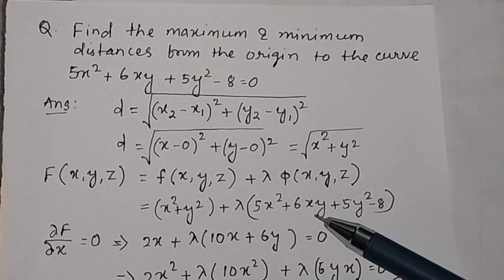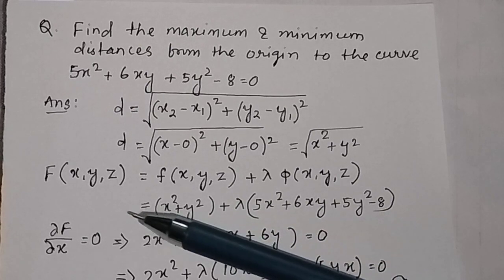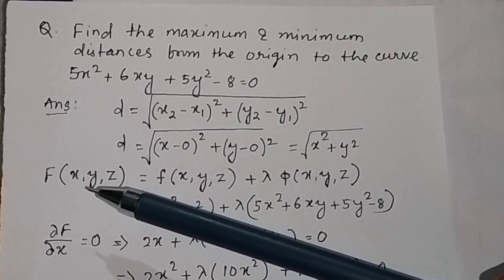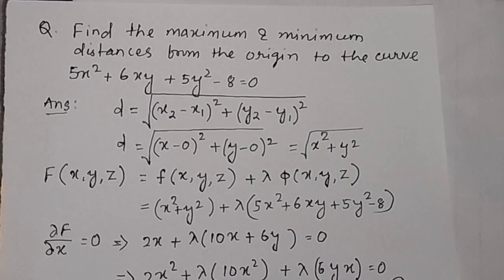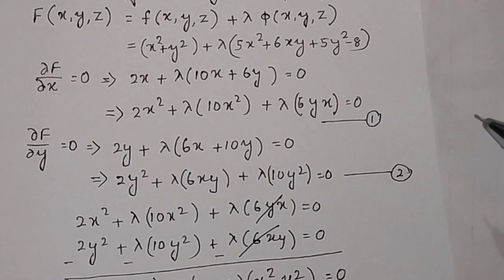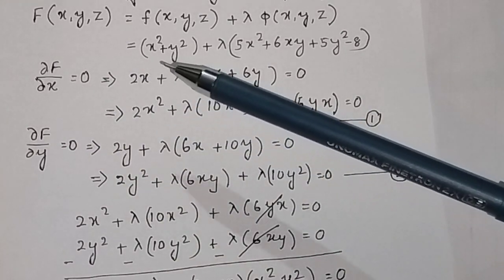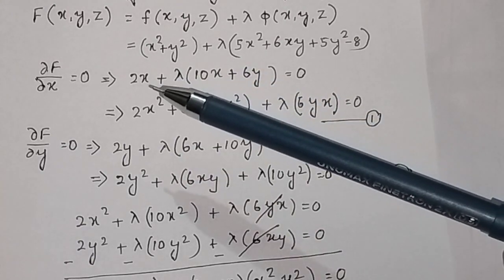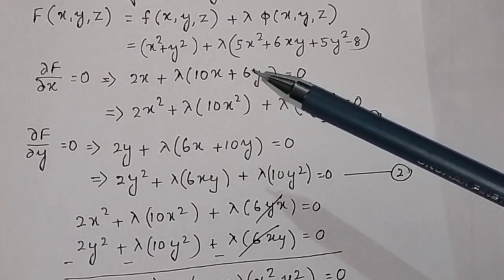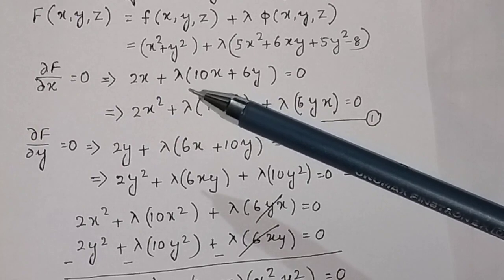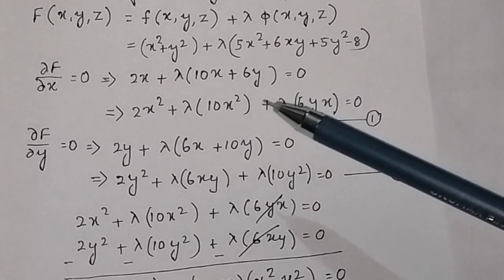To solve the constraint optimization using Lagrange multiplier, we take the partial derivative of the combined function with respect to x and set it to 0. The partial derivative of x² + y² gives 2x, and the partial derivative of the constraint gives λ(10x + 6y), so we get: 2x + λ(10x + 6y) = 0.